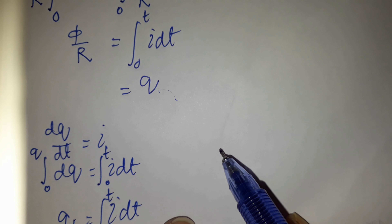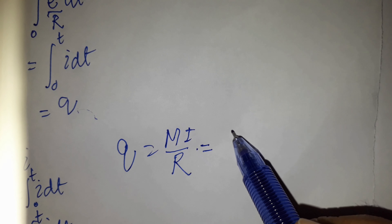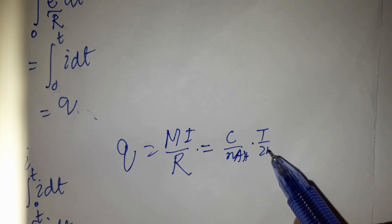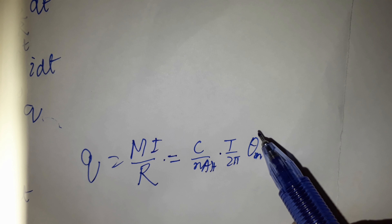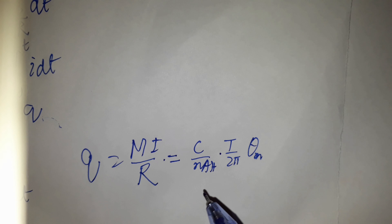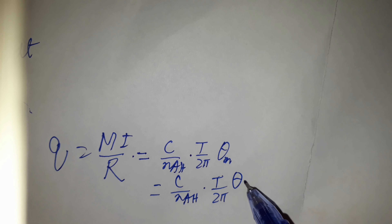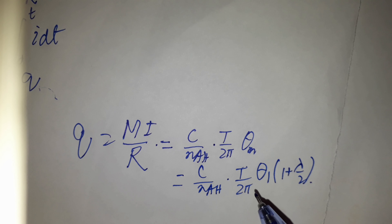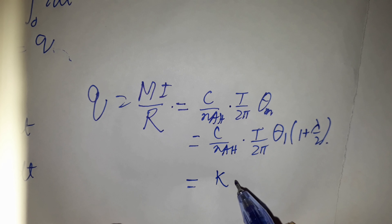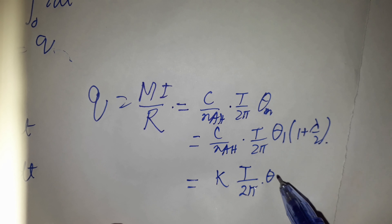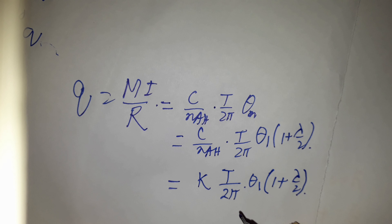This charge in the ballistic galvanometer is measured by the formula q equals (C/NH) times (T/2π) times theta_m, where theta_m is the deflection in the absence of damping. Since there is damping, the corrected expression is q equals K times (T/2π) times theta_1 times (1 plus lambda/2), where lambda is the log decrement and C/NH equals K/T is the constant of the ballistic galvanometer, and theta_1 is the first ballistic throw due to damping.